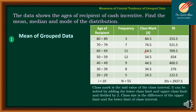Likewise, the remaining class marks are 64.5, 54.5, 44.5, 34.5, and 24.5 respectively. The class size is the difference of the upper limit and the lower limit plus 1. For example, 29 minus 20 plus 1 equals 10. Similarly, 89 minus 80 plus 1 also equals 10. So the class size is 10.